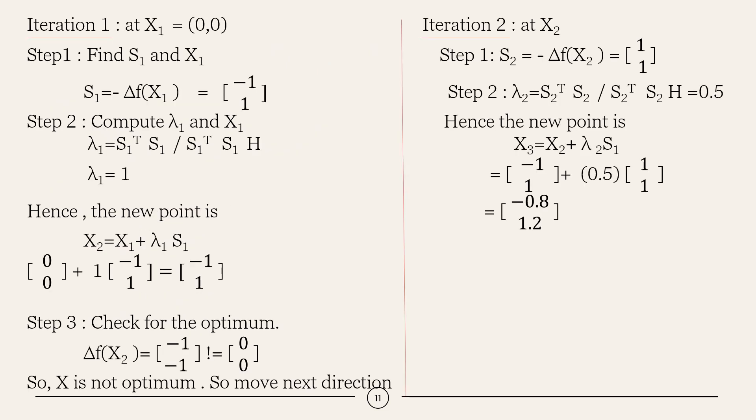In the iteration 1, at x equal to 0 comma 0, find the search direction at x1. So, we have to find the gradient and we have to substitute the x value, x1 points in the given equation. In step 2, we have to calculate the step length. So, computing the lambda value and x1. For lambda, we can directly use this formula: s1 transpose s1 divided by s1 transpose s1 H, where H is defined as Hessian matrix. And if we calculate this, we will be getting lambda value as 1. Hence, the new point is x2 equal to x1 plus lambda 1 s1. The initial guess was 0 comma 0 and we got lambda value as 1 and search direction as minus 1 comma 1. So, if we add that, the new point will be minus 1 comma 1.